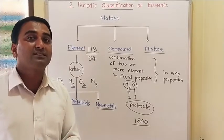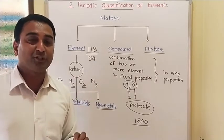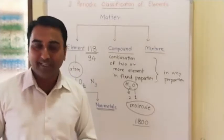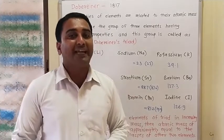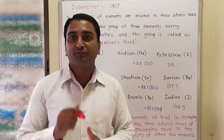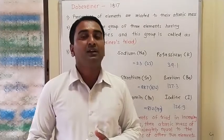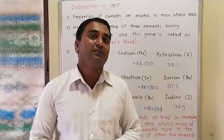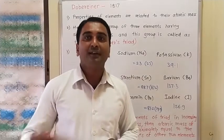But when people started to discover different elements, classification became necessary. Many scientists gave their contributions to the classification of elements. As knowledge about elements and their properties increased, different scientists tried different methods of classification. We are going to learn about four scientists: the first is Döbereiner with his triads, the second is Newlands with his Law of Octaves, the third is Mendeleev with his periodic table, and finally the modern periodic table.